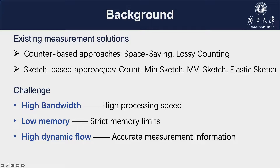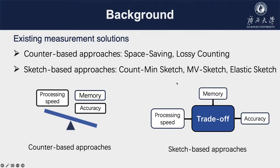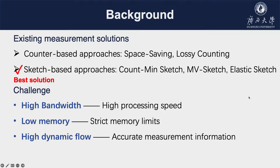Sketch-based approaches use multiple hash functions to store flow information into a sketch, and they have recently been widely accepted for approximate heavy flow detection thanks to their high accuracy and processing speed. Nowadays, network bandwidth has fast growth, switches have limited memory, and networks are highly dynamic, requiring solutions with high processing speed, strict memory usage, and high accuracy. Counter-based approaches trade memory and accuracy for processing speed, while sketch can make a trade-off among memory, processing speed, and accuracy. So sketch is the best solution for network measurement.